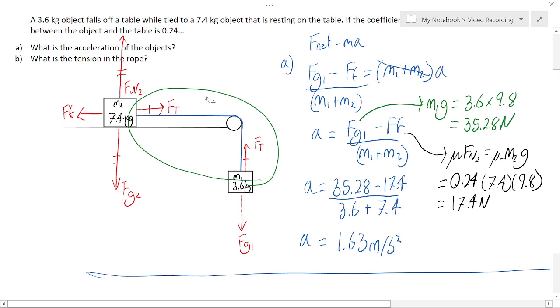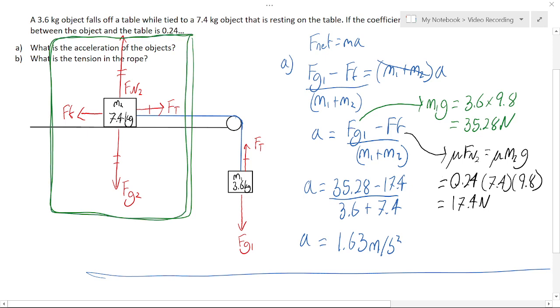So in order to find the tension force, we need to change our perspective. Instead of looking at both the masses, we're going to look at just one mass. Now it doesn't matter which mass we pick, but I'm going to start by picking this one where tension is the winning force.